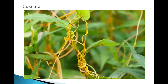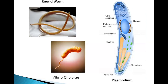Cuscuta is a stem parasite. It is yellow in color and has no photosynthetic material inside it. It has suckers that enter into the host plant and take away nutrition from both the xylem and phloem — that is, it takes water as well as the food prepared by the plant. Therefore it is also called a total parasite.